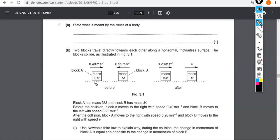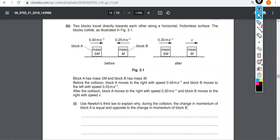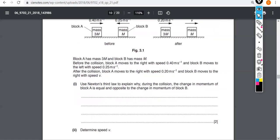Alright. Moving right along, it gives us some information here. And before we calculate the speed v, it actually poses a question. It says, use Newton's third law to explain why during the collision, the change in momentum of block A is equal and opposite to the change in momentum of block B. It's a very similar question to the one that we had last Friday and on Monday, for those of you that took Friday off. It's nearly the same, but it's not identical.